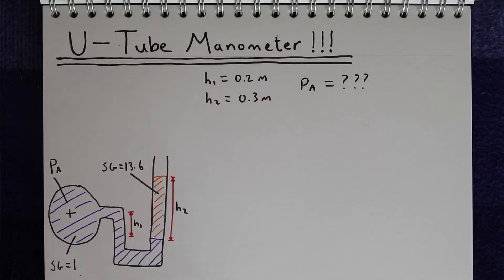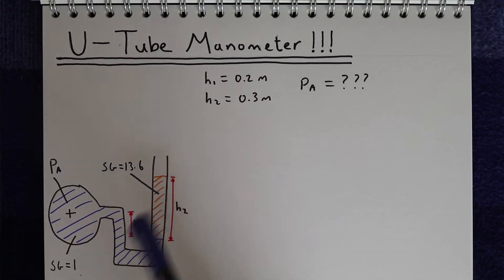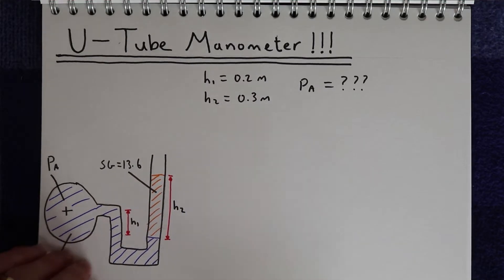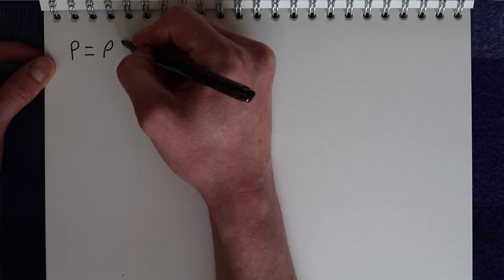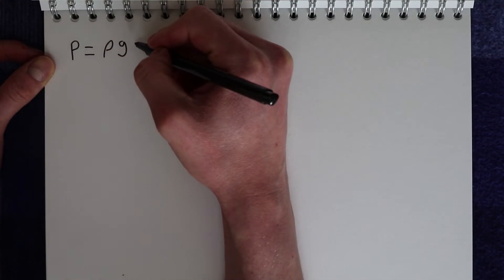Before we try to solve the problem, it's worth just taking a second to think about why the manometer is designed like this, and the actual physics behind how it works. What we need to remember in all of these type of problems is that the pressure of a fluid is equal to the density of that fluid times by acceleration due to gravity times by the height of that fluid. So that gives us the static pressure of a fluid.